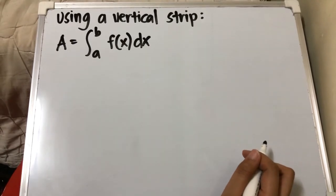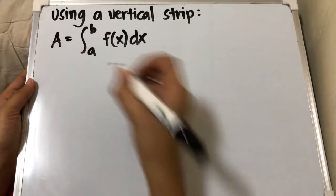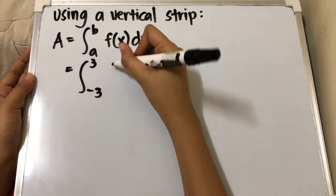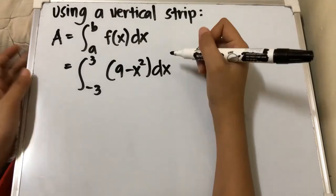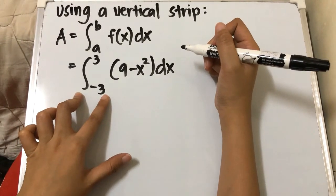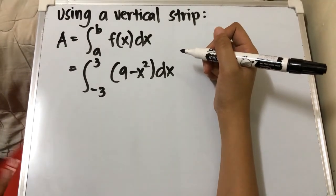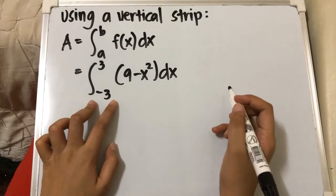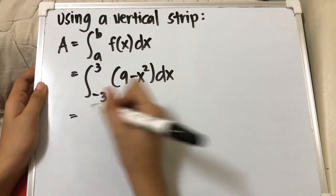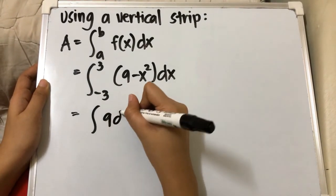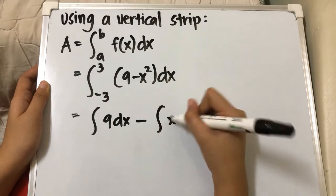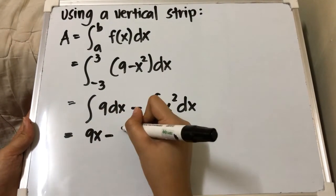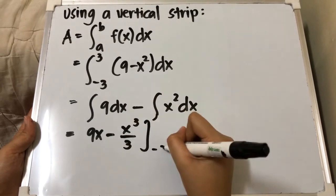Another way: if you don't want to solve only the first quadrant, change the limits from negative 3 to 3 with the same function 9 minus x² dx. Same process — we have the integral of 9 dx minus the integral of x² dx from negative 3 to 3. Integrating: 9x minus x³ over 3, evaluated from negative 3 to 3.